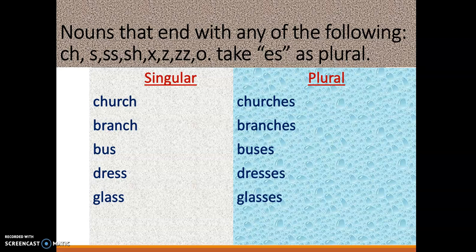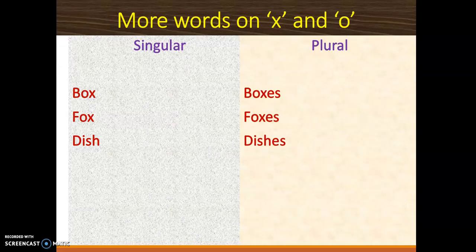Now, words that end with any of the following - ch, s, ss, sh, x, z, zz, o - take 'es' as plural. Let's look at these words. We have church-churches, branch-branches, bus-buses, dress-dresses, glass-glasses. All you need to do is to add 'es' to make a plural formation. And we go to more words on 'x' and 'o'. When you have words ending with 'x' and 'o', they take the 'es' as well: box-boxes, fox-foxes, dish-dishes.